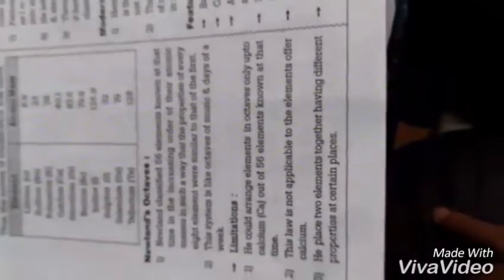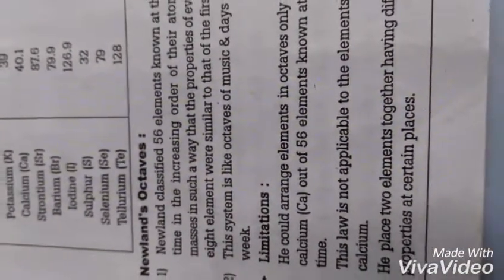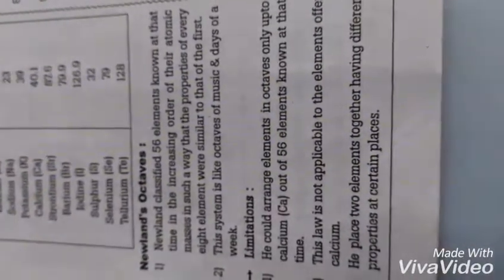So now, what were the limitations of Newlands' octaves? The first limitation of Newlands' octaves is he could only arrange elements in octaves up to calcium out of the 56 elements known at that time.